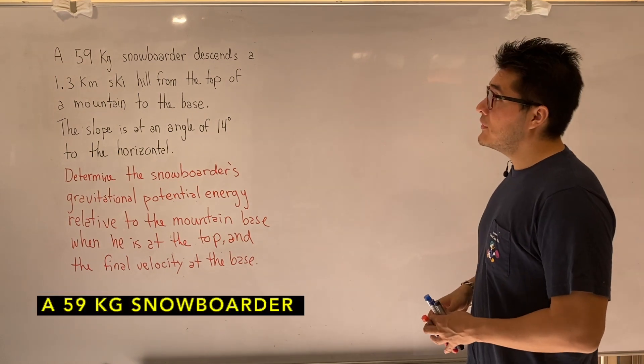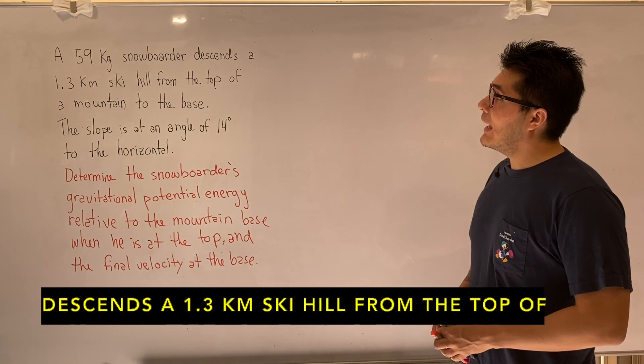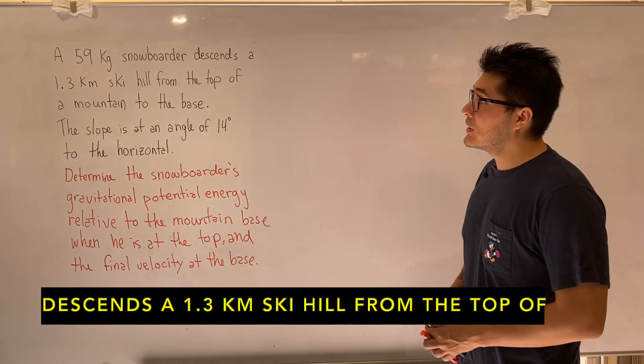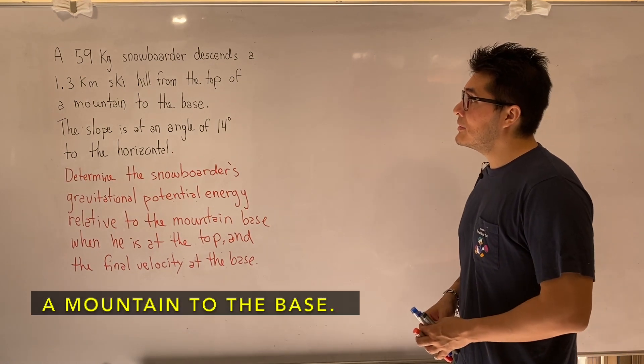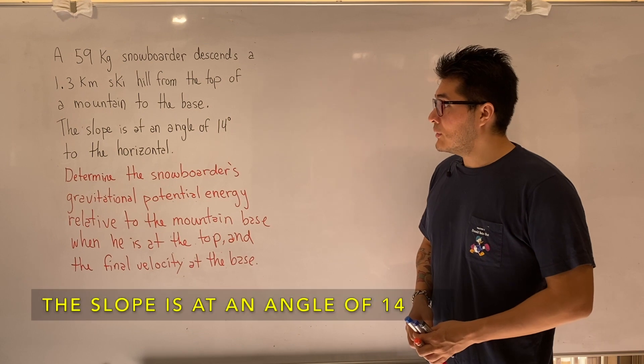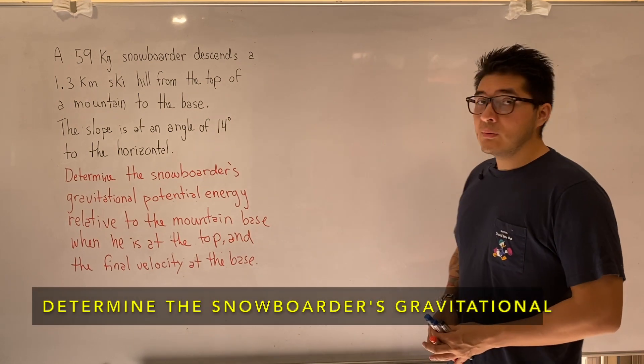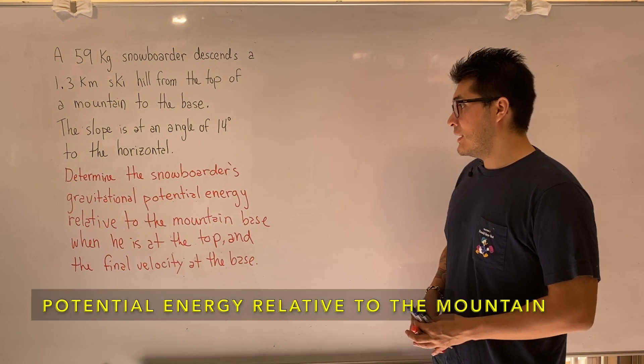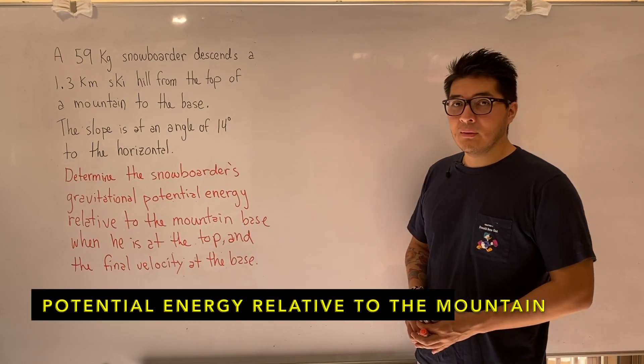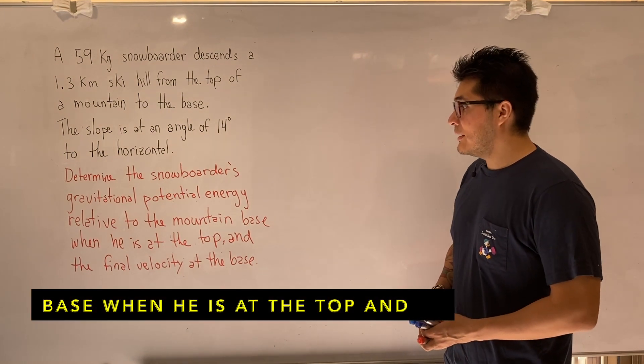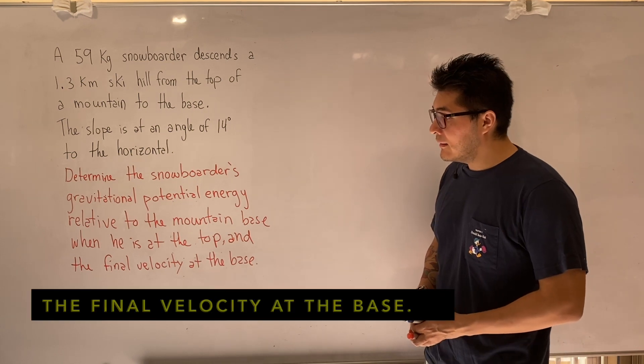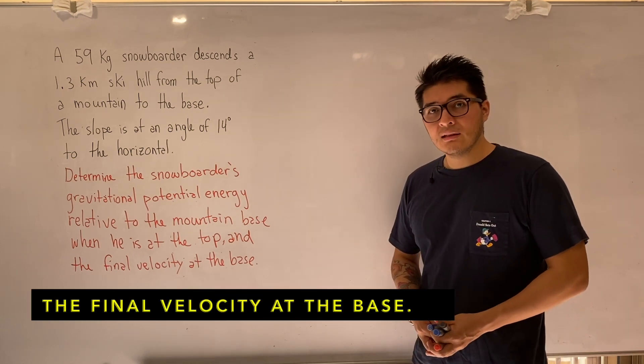So let's read the question together. We have a 59 kilogram snowboarder and they descend a 1.3 kilometer ski hill from the top of a mountain to the base. The slope is at an angle of 14 degrees to the horizontal. Determine the snowboarder's gravitational potential energy relative to the mountain base when he is at the top, and the final velocity at the base.